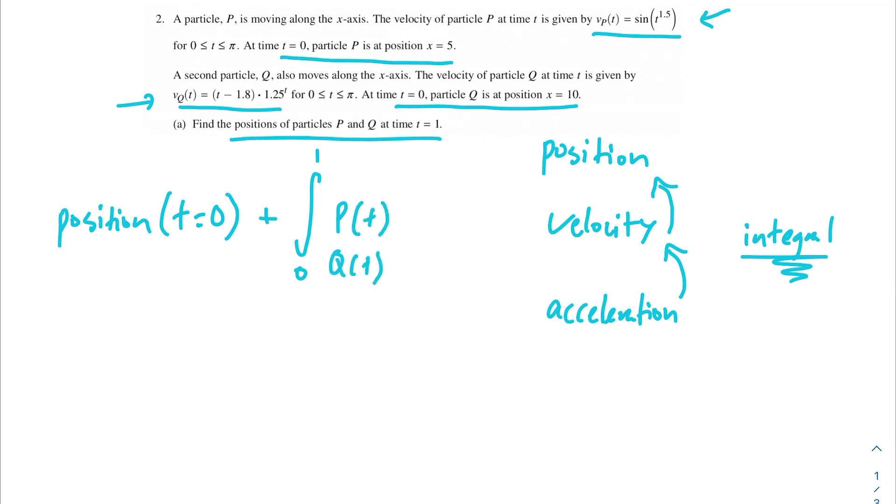Let's find the position of particle P first. So the position at t equals 0 for particle P is 5, and then we add the integral from 0 to 1 of the velocity, which would be sine of t to the 1.5 power dt. P at 1 is equal to 5.371.